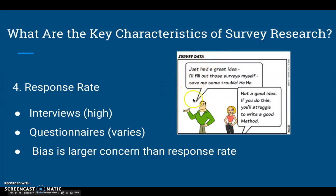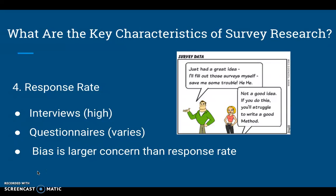There's a comic where a guy says 'I'll just fill out those surveys myself — saves me some trouble,' and the lady responds 'not a good idea — you'll struggle to write a good method.' You might improve response rate by being unethical, but that won't create good research. The larger concern isn't really response rate itself — you can still create solid survey research with a lower rate — but if you have a bias, meaning surveys coming back don't reflect the population, that's a major concern.